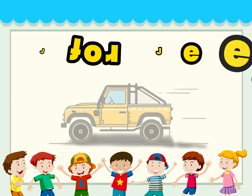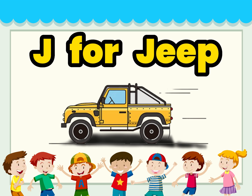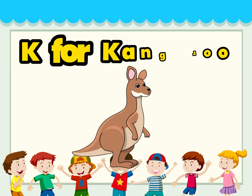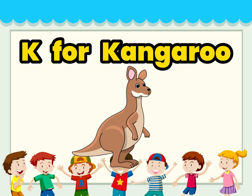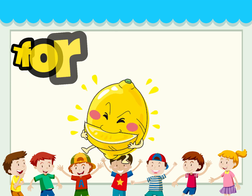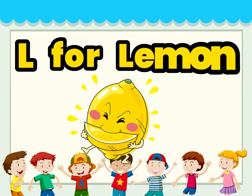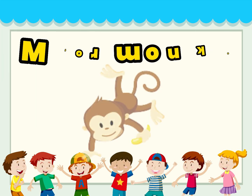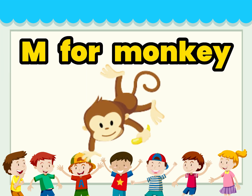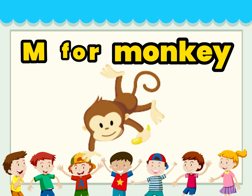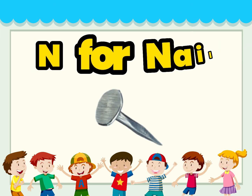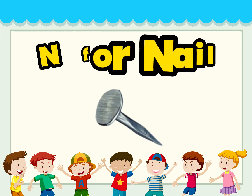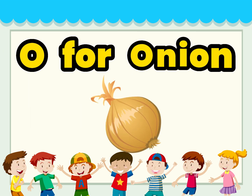F for Dog, D for Dog, D for Dog. H for Horse, H for Horse. I for Iron. J for GLE. K for Kangaroo, K for Kangaroo. L for Lemon. L for Lemon, M for Monkey. M for Monkey, N for Nail. N for Nail, O for Onion.